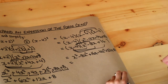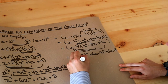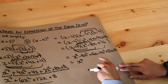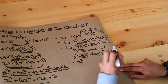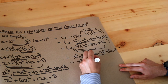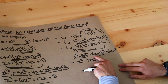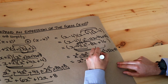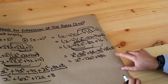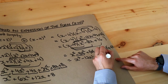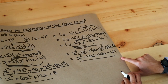Last step: collect like terms. We've only got one x cubed term. For x squared: minus 8x squared minus 4x squared is minus 12x squared. For x terms: 16x plus 32x is plus 48x. And the constant term is minus 64. So the final answer is x cubed − 12x squared + 48x − 64. Thank you.